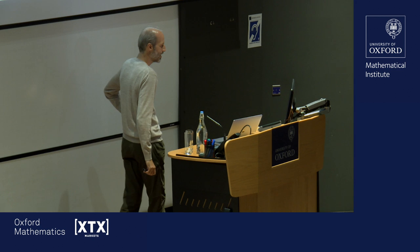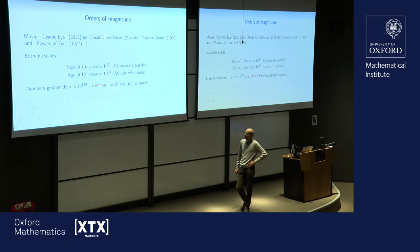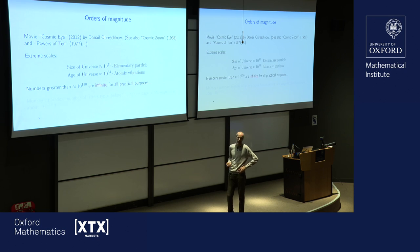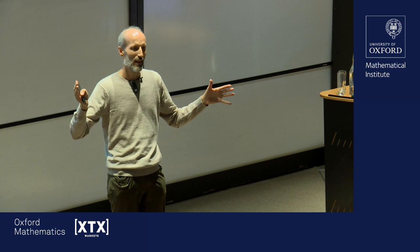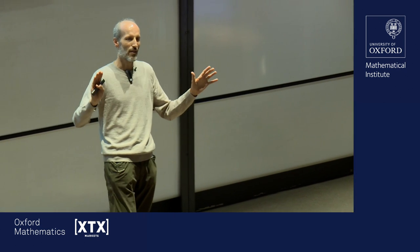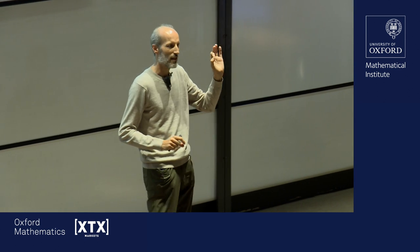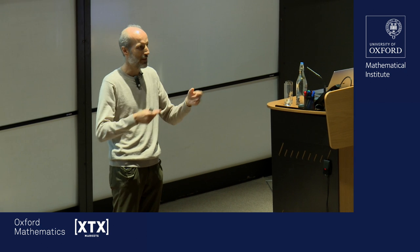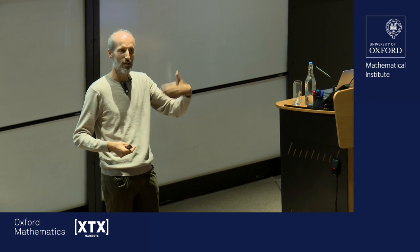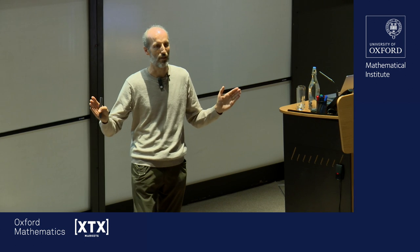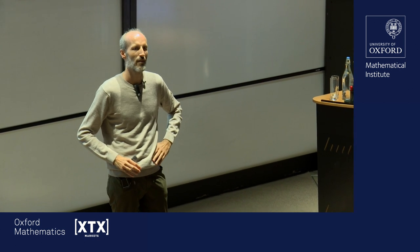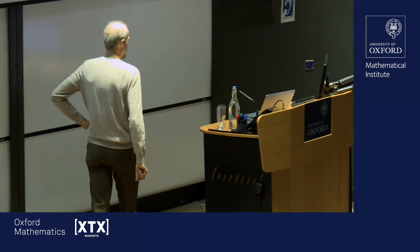So in some sense there are about 40 orders of magnitude between the smallest and largest time scales we can imagine. For all practical purposes, 10 to the 150 is about the largest possible number you can imagine. If you take the whole history of the whole universe and make a 3D movie of it, where every pixel is the size of a subatomic particle and the time resolution is the vibration of subatomic particles, you'd have about 10 to the 150 pixels in that movie. So for all practical purposes, 10 to the 150 is infinite.